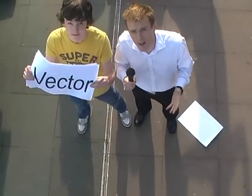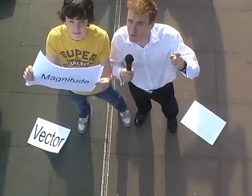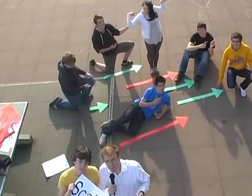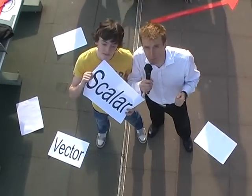Vectors have both magnitude and direction. Magnitude describes how big something is. Direction describes what direction it's moving.